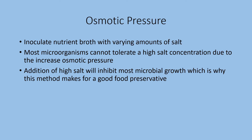Osmotic pressure is another form of physical agent that can help control microbial growth. Usually what we're talking about here is altering the salt concentration of the solution you're growing the microorganism in. For this test, you have nutrient broth with varying concentrations of salt. If a microorganism cannot tolerate a high salt concentration, it's usually because there's a difference in osmotic pressure it cannot handle, and it ends up killing the cell. This has been used in food microbiology and food preservation — increasing salt often acts as a way of preserving food because most organisms cannot tolerate high salt, though there are a few that can.